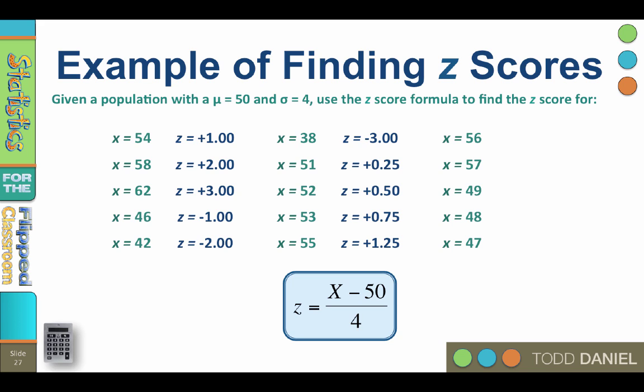For an x of 56? 1.50. For 57? 1.75. Are you spotting the pattern?